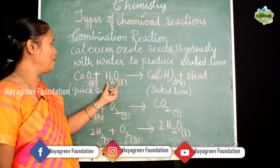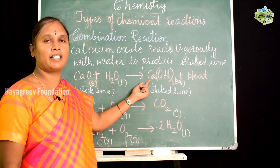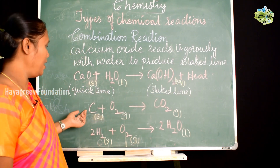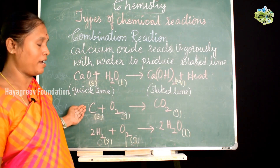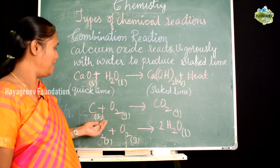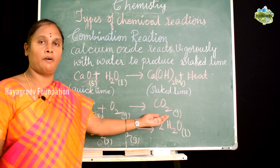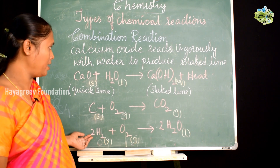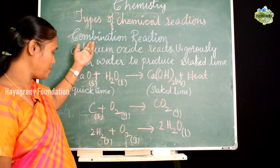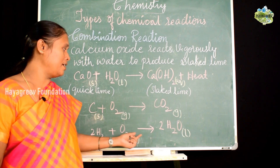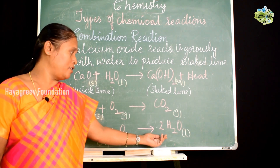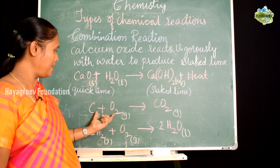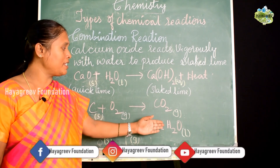Calcium oxide reacts with water to form slaked lime, which is calcium hydroxide Ca(OH)2, and heat is liberated. Other examples: carbon when it burns in the presence of oxygen forms carbon dioxide. Also, hydrogen gas when it reacts with oxygen leads to formation of water — 2H2 + O2 → 2H2O. In all these cases, two reactants are present but the product formed is a single one.